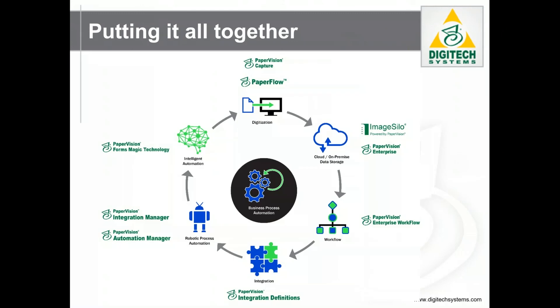So how can you put this all together? Digitech Systems is the only company offering products to meet every need on the business process automation chart. Everyone else bolts together technologies from multiple vendors and hopes they don't break, but with us you know the products were designed from the very beginning to work smoothly together. To help you digitize any paper-based information, choose either PaperVision Capture or PaperFlow depending on the volume of information you need to scan.